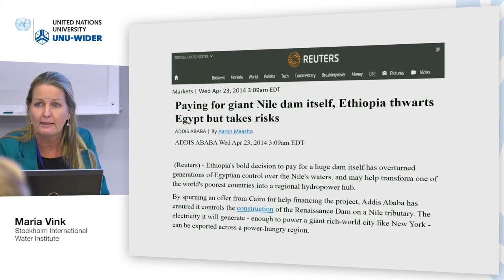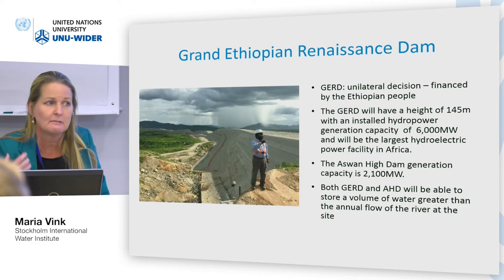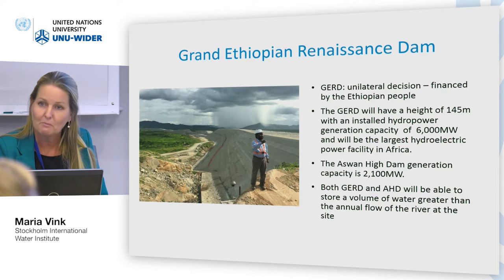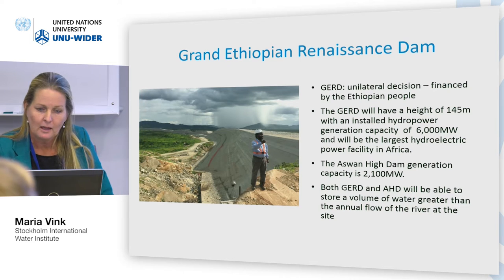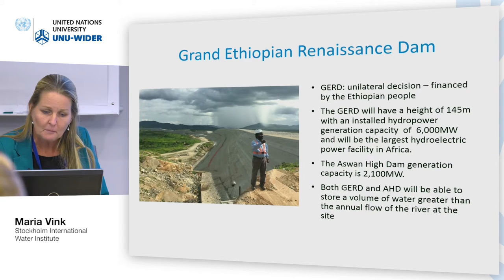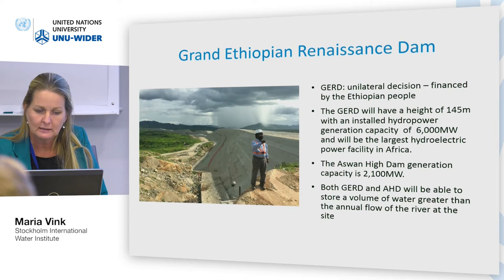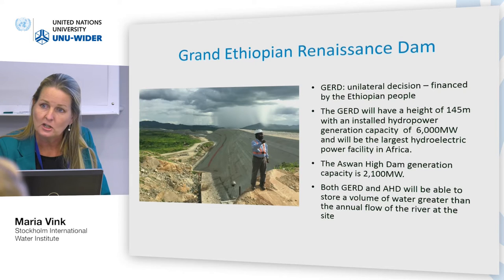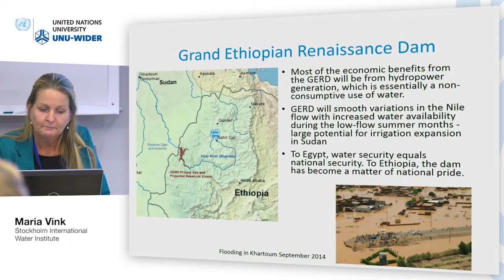Basically every government employee in Ethiopia gives one month's salary per year to the dam project, with additional fundraising from private people and expats. Because the Ethiopian people are financing it, they consider it their dam — they are very proud and say 'it's my dam, I'm part of it, I'm financing it, I own it.' This is very important in terms of how to manage this dam and the expectations from the Ethiopian people. It was a unilateral decision. The dam has a capacity of 6,000 megawatt — the Aswan High Dam in Egypt has a capacity of 2,100 megawatt.